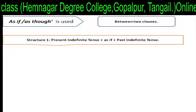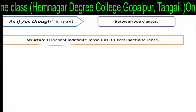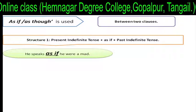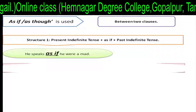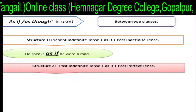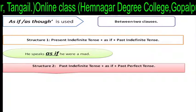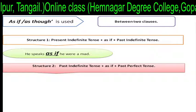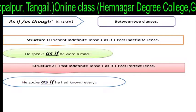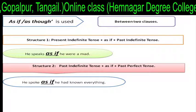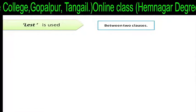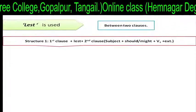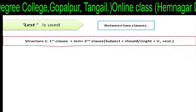As if or as though is used between two clauses. Structure one: present tense plus 'as if' or 'as though' plus past tense. For example: 'He speaks as if he were mad.' Structure two: past tense plus 'as if' or 'as though' plus past perfect tense. For example: 'He spoke as if he had known everything.'